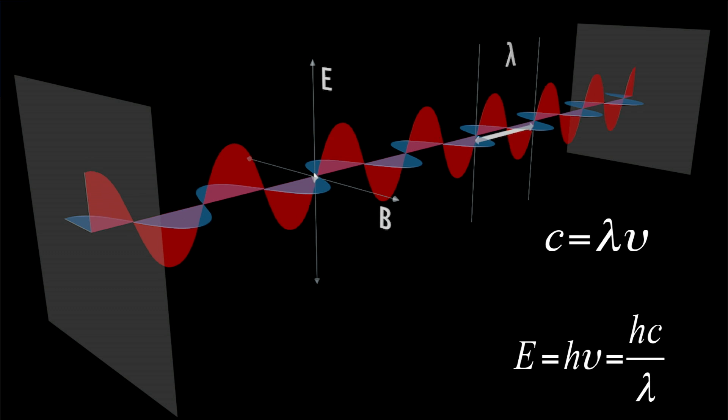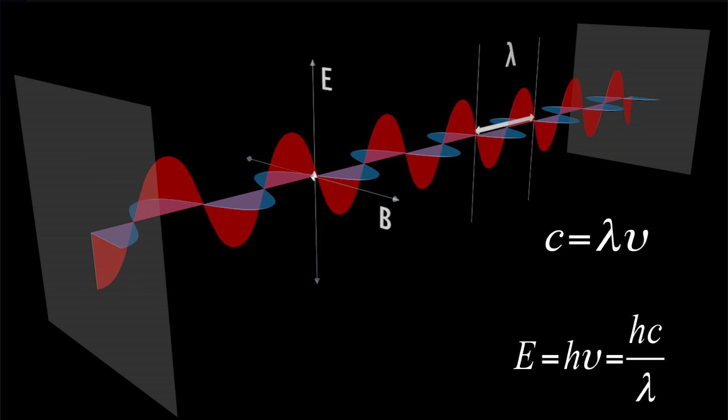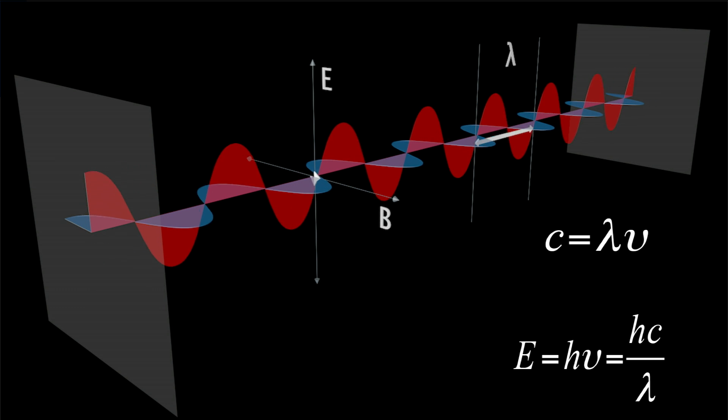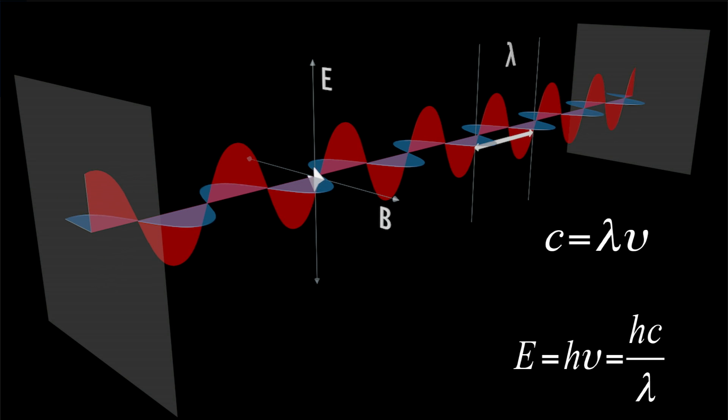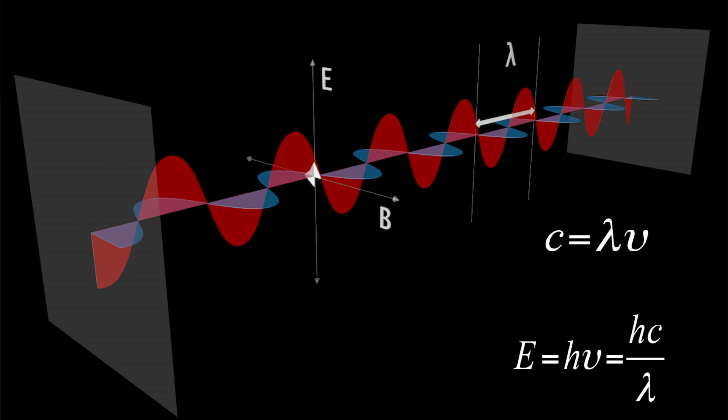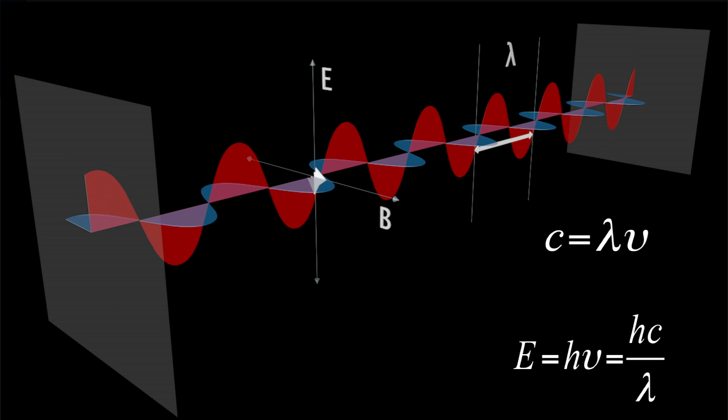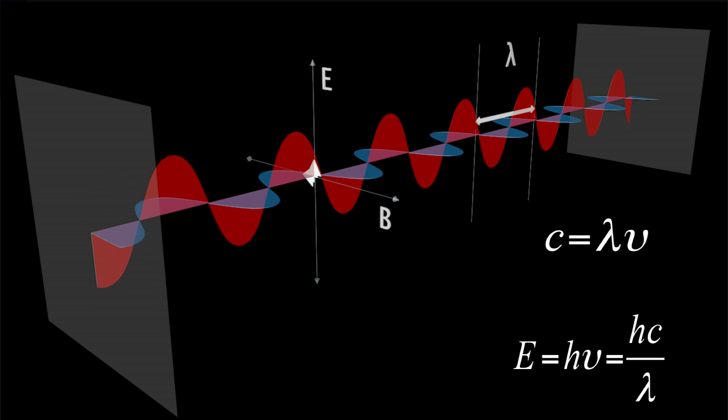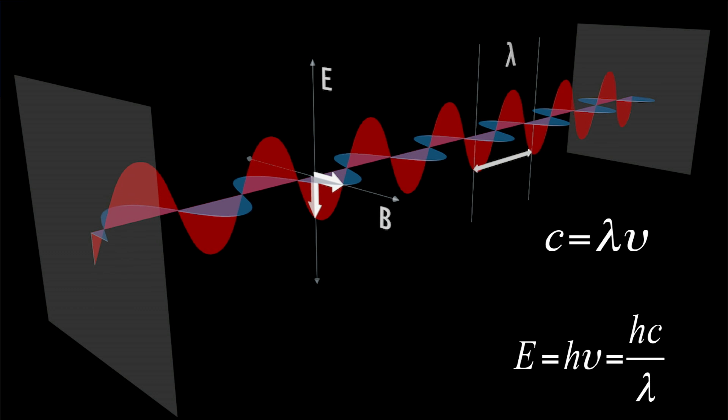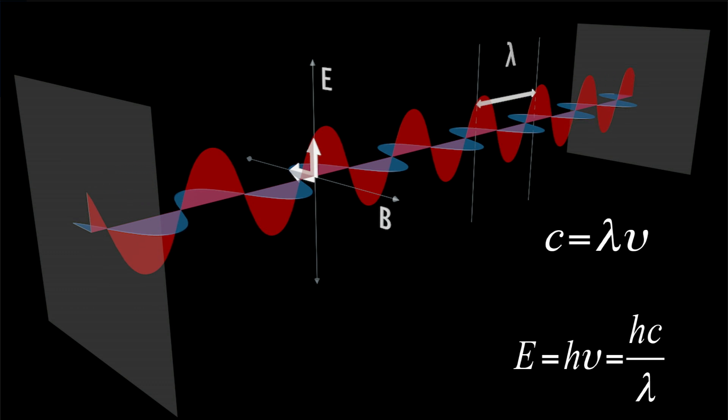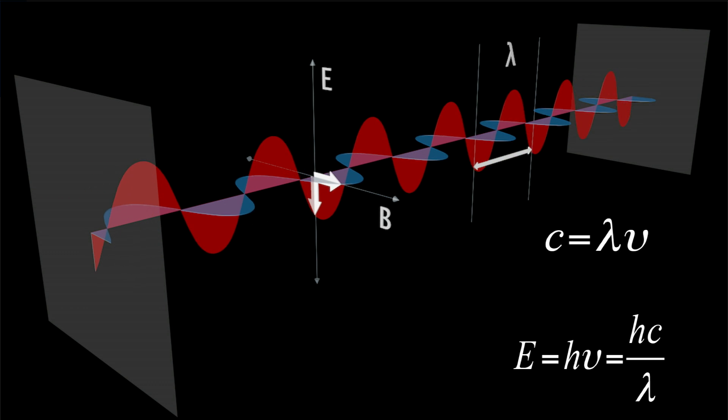The energy of the photon with wavelength lambda is equal to the product of the Planck constant h and the frequency. As the frequency equals the velocity of light divided by the wavelength, the photon energy can also be expressed in terms of wavelength. It is equal to the product of the Planck constant h and the velocity of light divided by the wavelength.